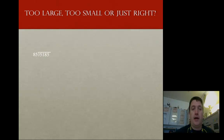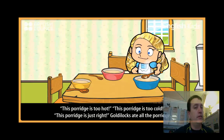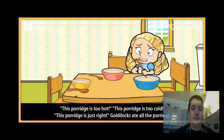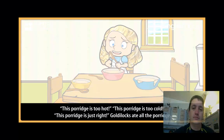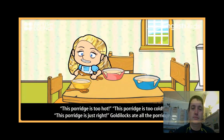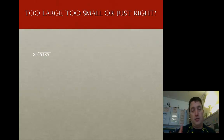We're going to work through a couple problems together. We're going to look at this: too large, too small, or just right? Now who does that sound like? Kind of reminds me of Goldilocks — this part is too hot, this part is too cold, this part is just right. We're kind of looking for that Goldilocks divisor. We want to find that just right number to multiply against our divisor.